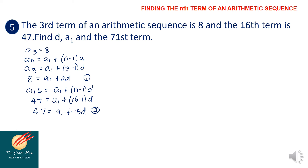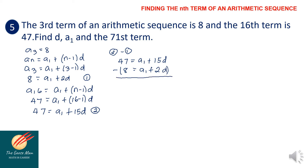Using the elimination method, subtract equation 1 from equation 2: 47 minus 8 equals (a sub 1 plus 15d) minus (a sub 1 plus 2d). The a sub 1 terms cancel, giving 39 equals 13d. Dividing both sides by 13, the common difference d equals 3.